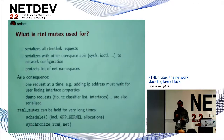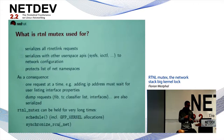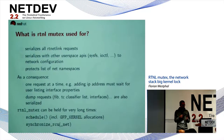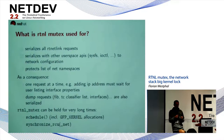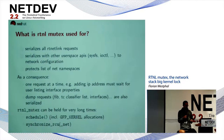RT Netlink mutex — what does it do, actually? First of all, as we have seen, it serializes really all the RT Netlink requests. It does not matter what they do — they all have to go through the single mutex.